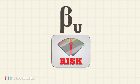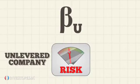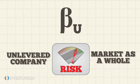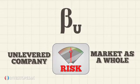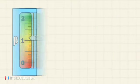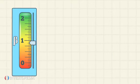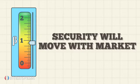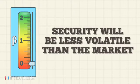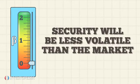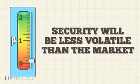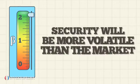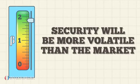The resulting number offers a measure of comparison relating to the risk of an unlevered company to the risk of the market as a whole. A beta of 1 indicates that the price of the security will move with the market. A beta of less than 1 means that the security will be less volatile than the market. A beta greater than 1 shows that the security will be more volatile than the market.